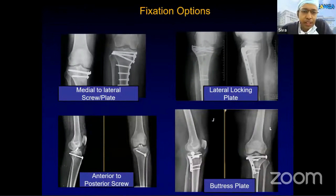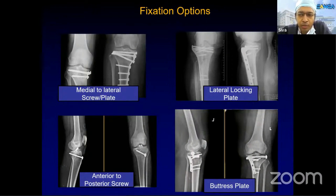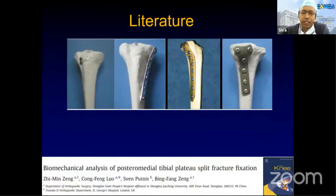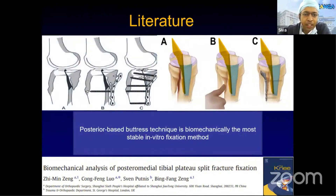The various fixation options we can use include a screw or plate from medial to lateral side holding the fragment. When locking plates came into use around 2005–2010, many fractures were fixed using a lateral locking plate holding the medial fragments, or anterior-to-posterior screws directed towards the posteromedial side, or a buttress plate. A biomechanical study showed that the posterior buttress plate is the most stable in vitro fixation method.